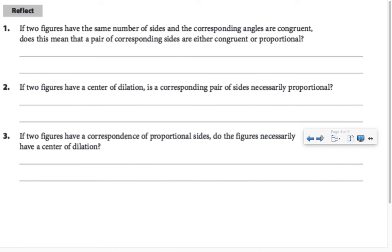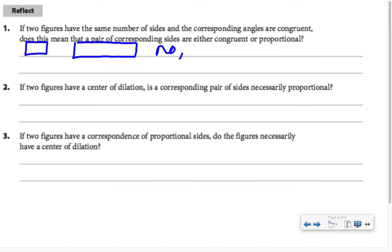If two figures have the same number of sides and the corresponding angles are congruent, does this mean that a pair of corresponding sides are either congruent or proportional? Well, if I have, let's say, a square compared to a rectangle, they have the same number of sides, their corresponding angles are congruent, but their corresponding sides are not necessarily congruent or proportional. So no, for example, consider a square versus a rectangle.